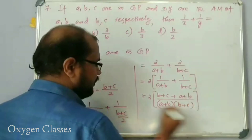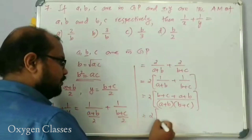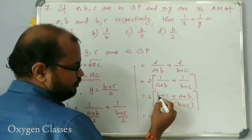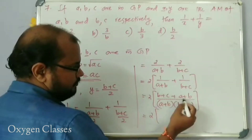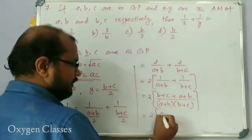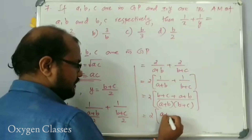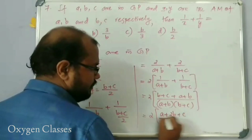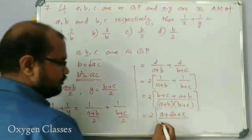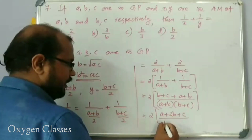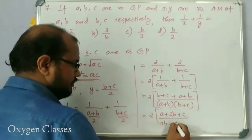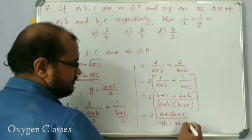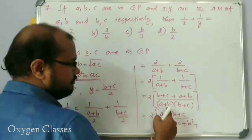Now this is equal to 2 into 2A plus — so this is 2B — A plus 2B plus C, divided by the multiplication of (A plus B) and (B plus C), which expands to AB plus AC plus B squared plus BC.